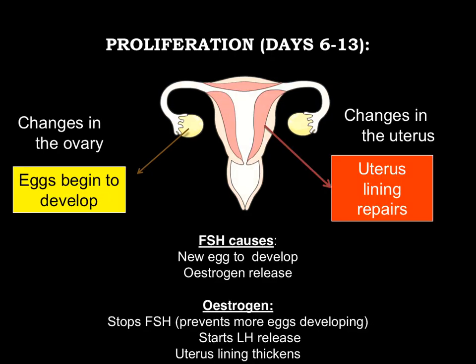Moving on to the proliferation period, days 6 to 13: in the ovary, the eggs begin to develop due to the increased level of FSH. In the uterus, the uterus lining starts to repair — this is the proliferation, the building up of the cells. The FSH released during the menstruation period has caused a new egg to develop and also causes oestrogen to be released. Once oestrogen reaches a certain level, it stops FSH — this is the first example of negative feedback — preventing more eggs from developing. It then stimulates luteinising hormone to be released, and the uterus lining thickens due to the increased level of oestrogen.